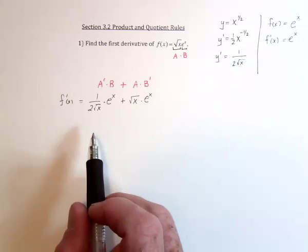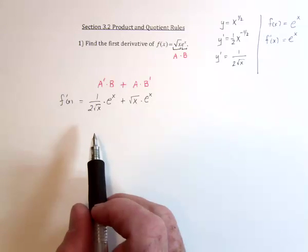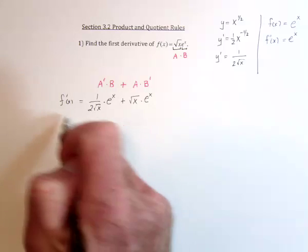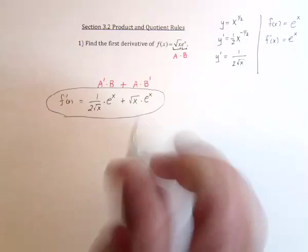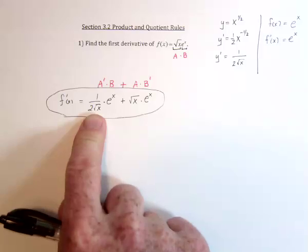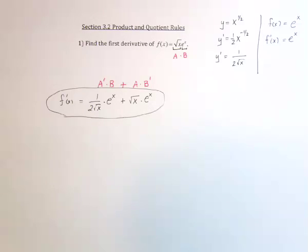Unless someone said, set this equal to 0 and solve for x. And by the way, it's okay to leave the radical x in the denominator, just don't leave negative exponents.